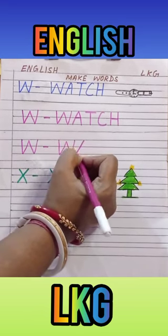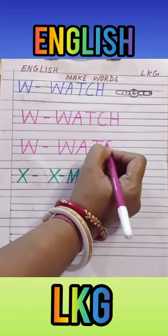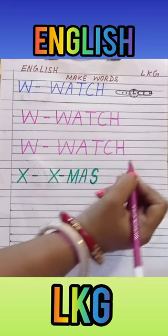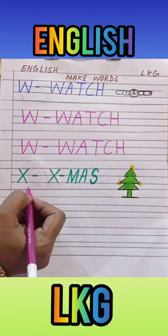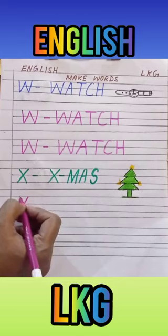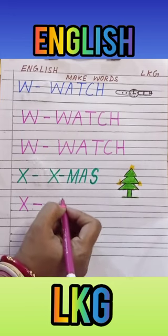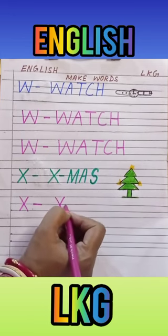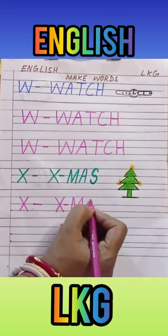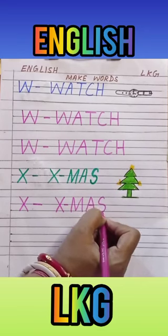W, A, T, C, H. Watch. Next time. X for Xmas. X, dash. Now we will write it. M, A, S. Xmas.